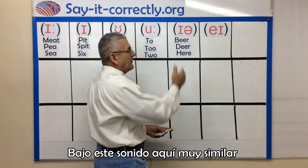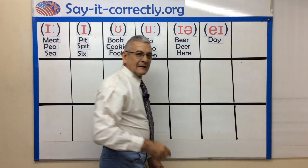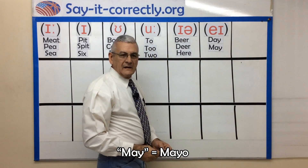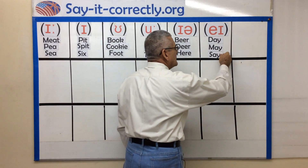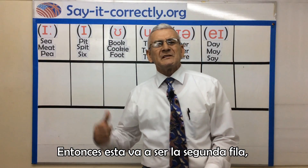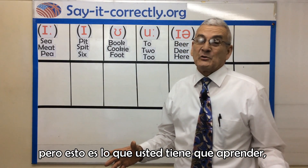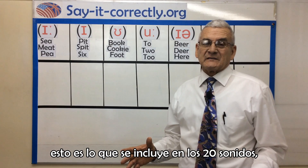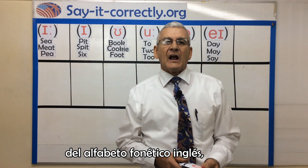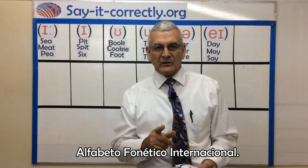Under this sound here, very similar to what we can read here. This is going to be the second row. I know that this sounds and looks crazy, but this is what you have to learn. This is what's included in the 20 sounds of the phonetic English alphabet — the International Phonetic Alphabet.